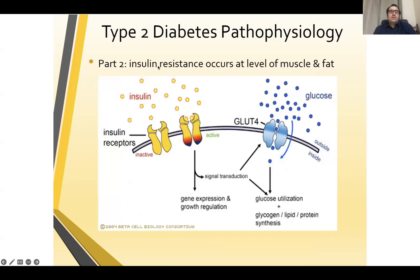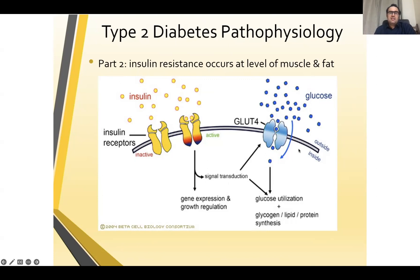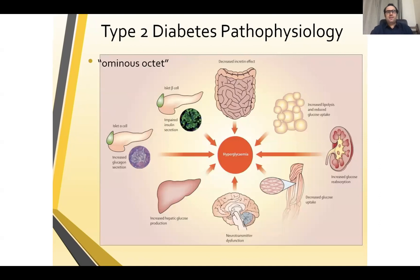The patient also has insulin resistance that occurs at the level of muscle and fat. Normally, insulin attaches to receptors, which become active, resulting in signal transduction and GLUT4 production and activity on muscle and fat cells, absorbing glucose from the blood. When this does not occur, glucose remains in the blood, resulting in hyperglycemia. This is the most important pathophysiology, and all the treatments can also be understood from this mechanism.